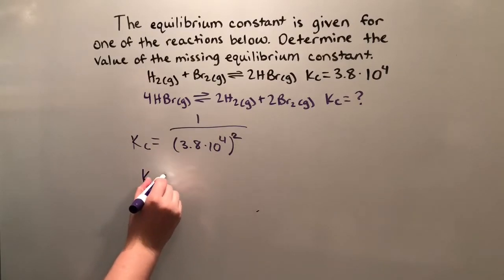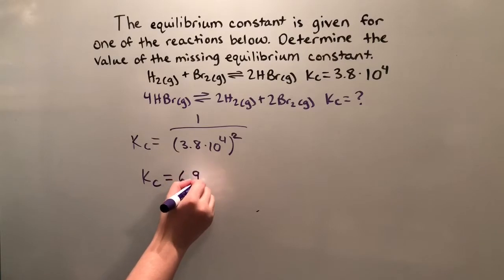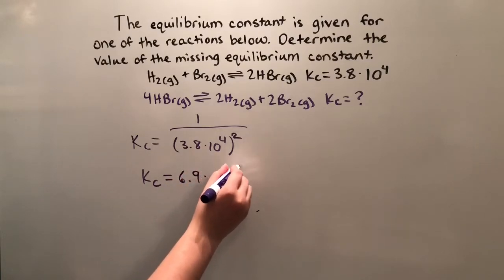If you plug this into your calculator, you're going to get Kc equals 6.9 times 10 to the negative 10.